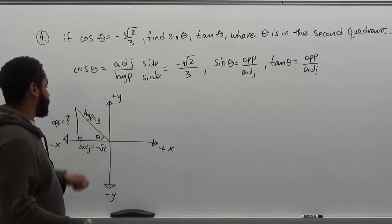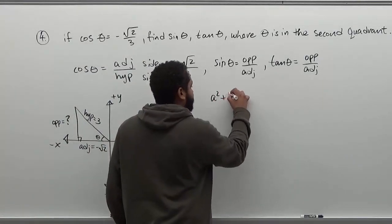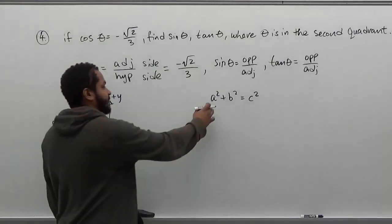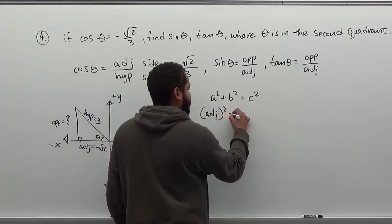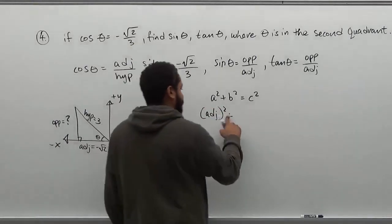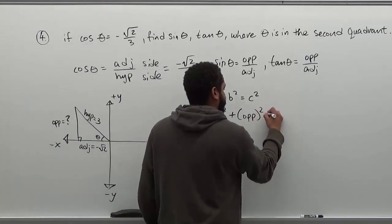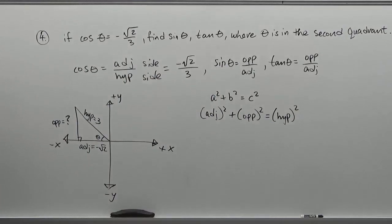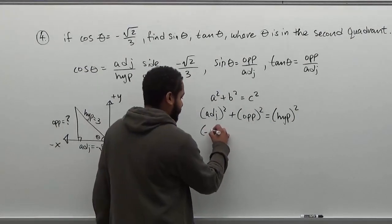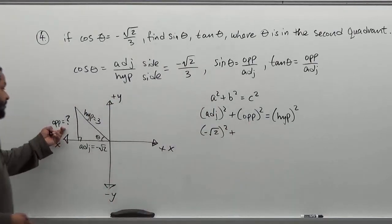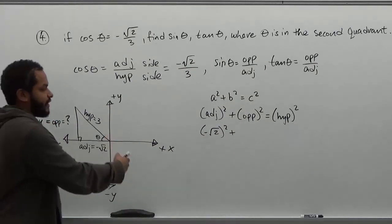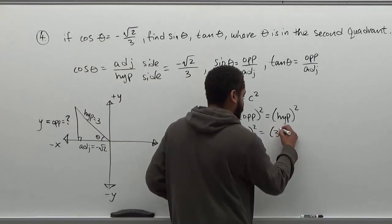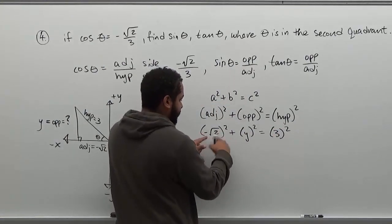Let's determine the three sides of the triangle using the Pythagorean theorem: a squared plus b squared equals c squared, where a is the adjacent side, b is the opposite side, and c is the hypotenuse. Our adjacent side is negative radical two, so we have negative radical two squared, plus y squared — where y is the opposite side — equals three squared, which is nine.